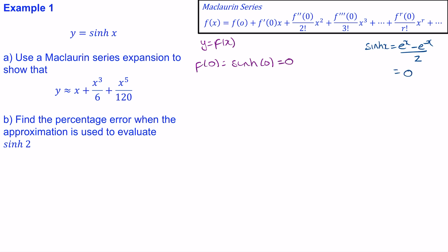So our first term will be 0. Now we need to work out the first derivative, which means we need to differentiate sinh(x). We covered in a previous video that the derivative of sinh(x) is cosh(x).